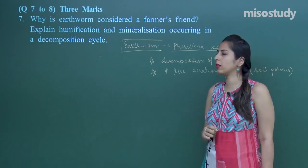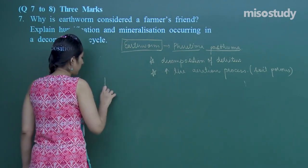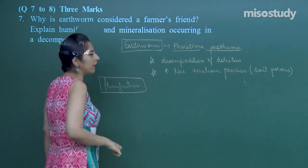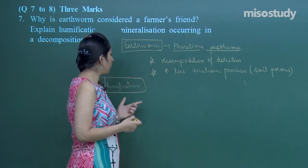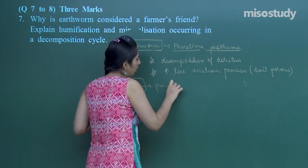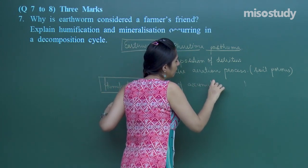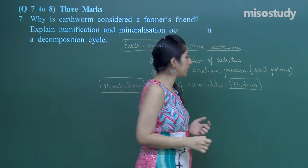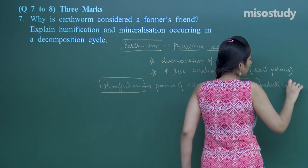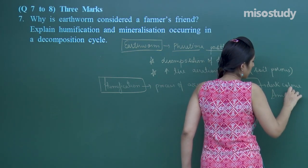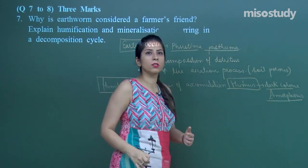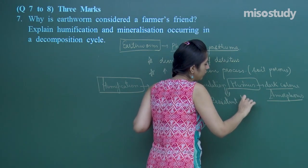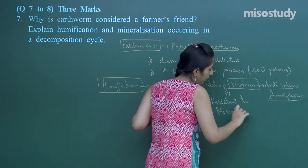Now explain humification and mineralization occurring in the decomposition cycle. Humification is the process of accumulation of humus. Humus is a dark-colored amorphous substance that is resistant to microbial or bacterial action.